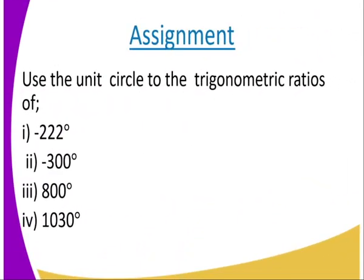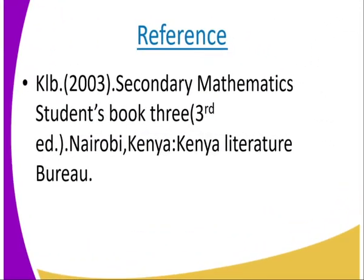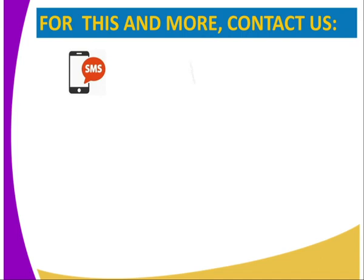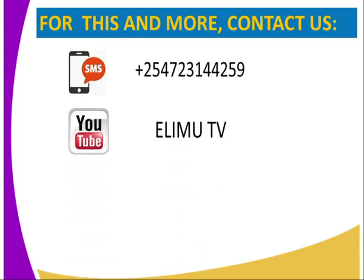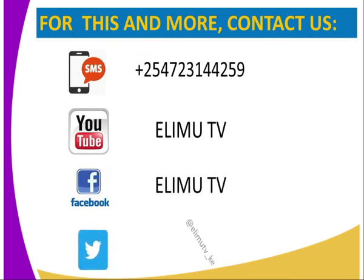Assignments: Use the unit circle to find the trigonometric ratios of negative 222 degrees, negative 300 degrees, 800 degrees, and 1030 degrees. For more information, visit the KFP 2003 Secondary Mathematics Student Book 3, third edition. You can also contact us via SMS, YouTube, Facebook, or Twitter. Stay tuned. Thank you.